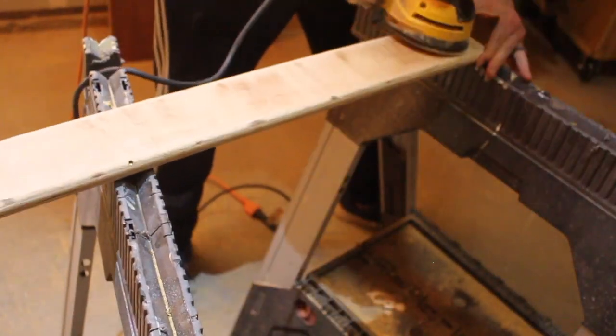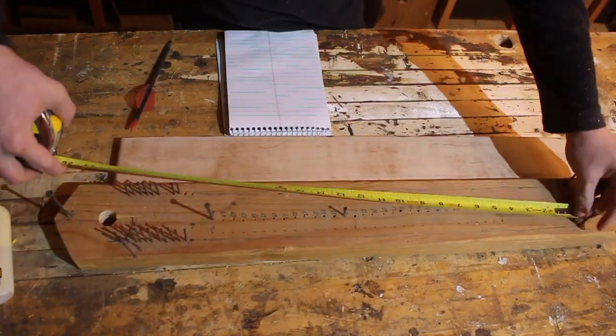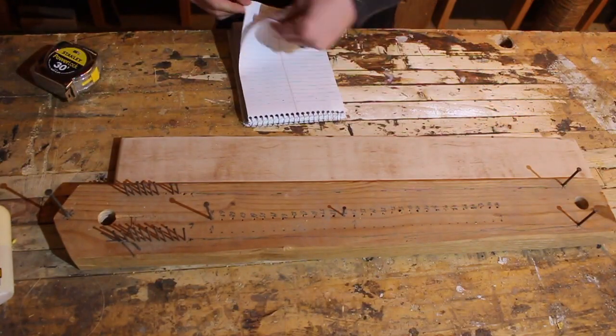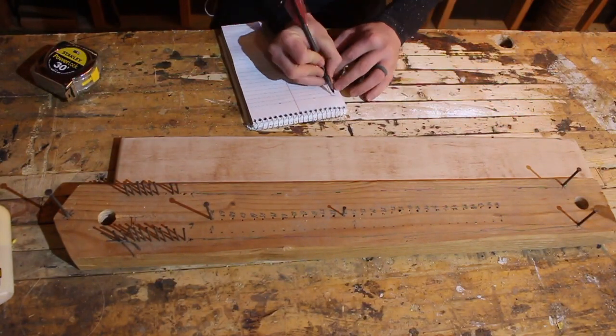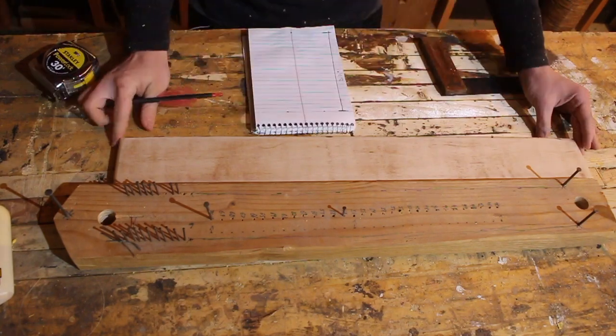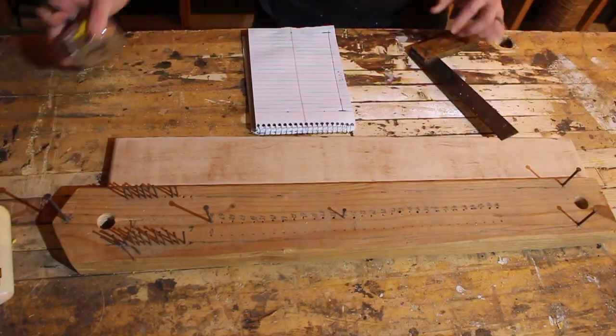I went ahead and rounded over the corners here with a round over bit in my router to make it as smooth as possible so that when I have the jig in my lap and in my hands there's no sharp corners. It makes it easy and smooth to work with.